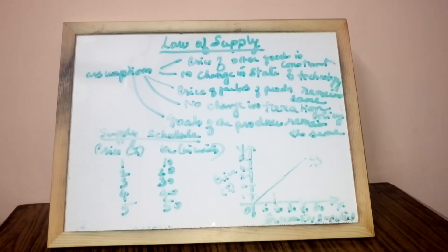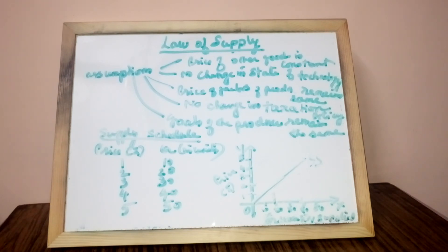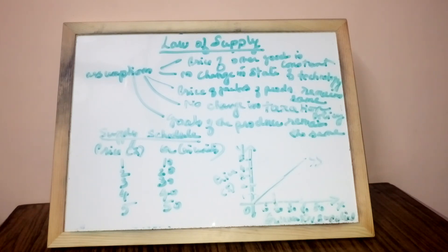Rare and precious articles are also outside the scope of the law of supply. For example, a rare painting — the supply cannot be increased even if prices rise. Finally, in economically backward countries, production and supply cannot be increased with a rise in price due to a shortage of resources. These are the exceptions to the law of supply.